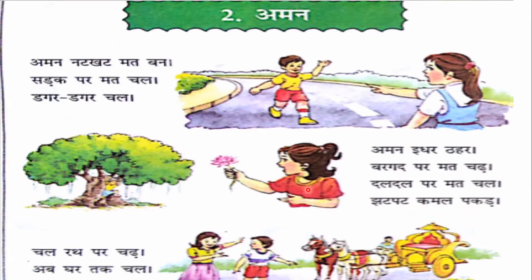So here Aman's sister is saying: idhar — idhar means here. Thahar — thahar means stop. Aman, stop here. Bargat par mat chad — bargat means banyan tree. You can see here in this picture, a banyan tree. Don't climb on the tree. Dal dal par mat chal — dal dal means mud. So don't walk in the mud.